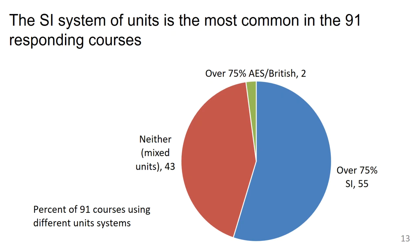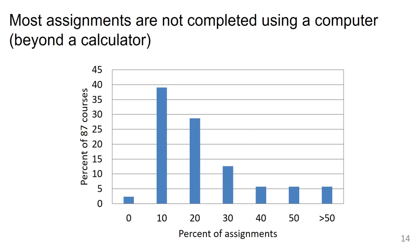As expected, the American Engineering System and British units are not used very commonly in the material and energy balance course. Most of the classes use over 75% SI units in their examples and work, and then another 43% use a mixture of both SI and American Engineering System units. The majority of the classes do not require a computer for most of the assignments — 20% or fewer of the assignments are completed using a computer in over half of the classes.